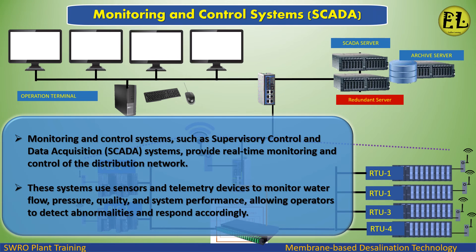Monitoring and control systems, such as Supervisory Control and Data Acquisition (SCADA) systems, provide real-time monitoring and control of the distribution network. These systems use sensors and telemetry devices to monitor water flow, pressure, quality, and system performance, allowing operators to detect abnormalities and respond accordingly.